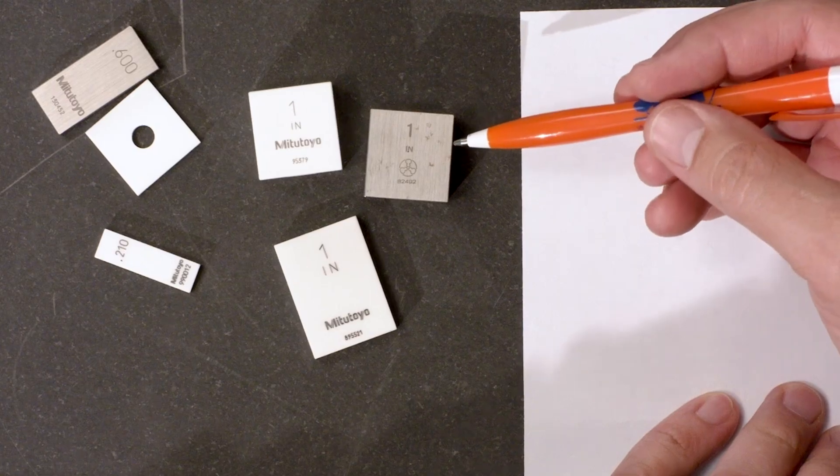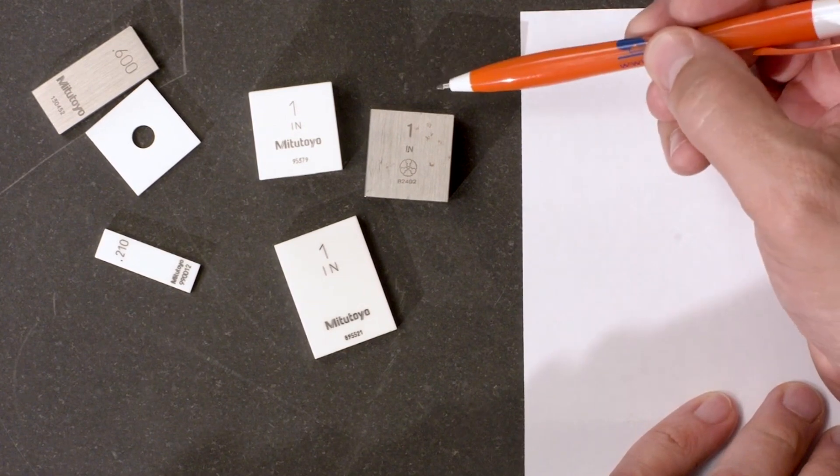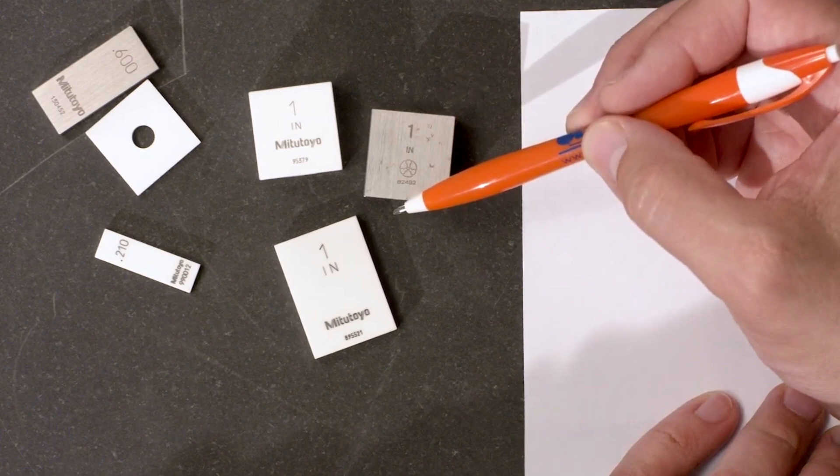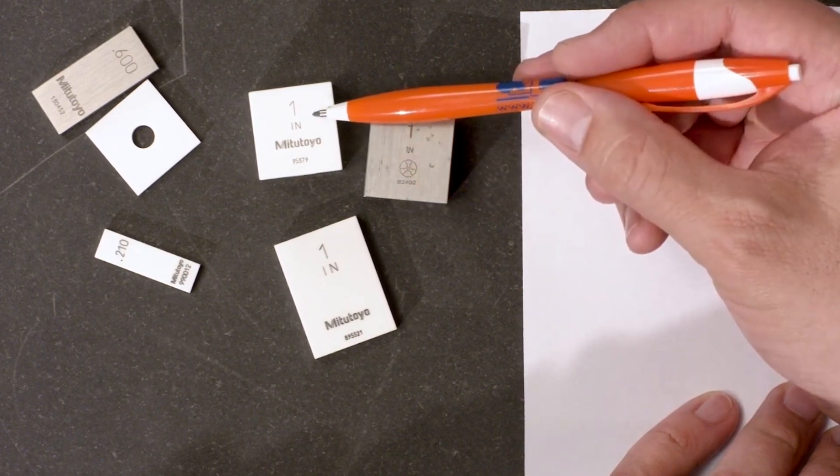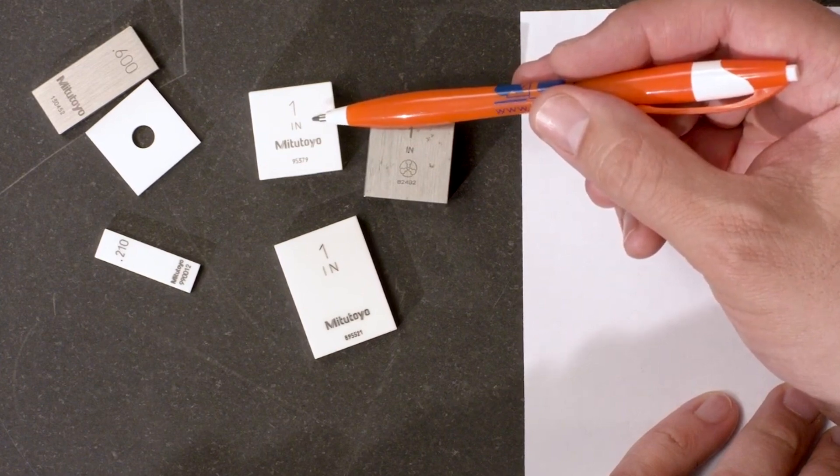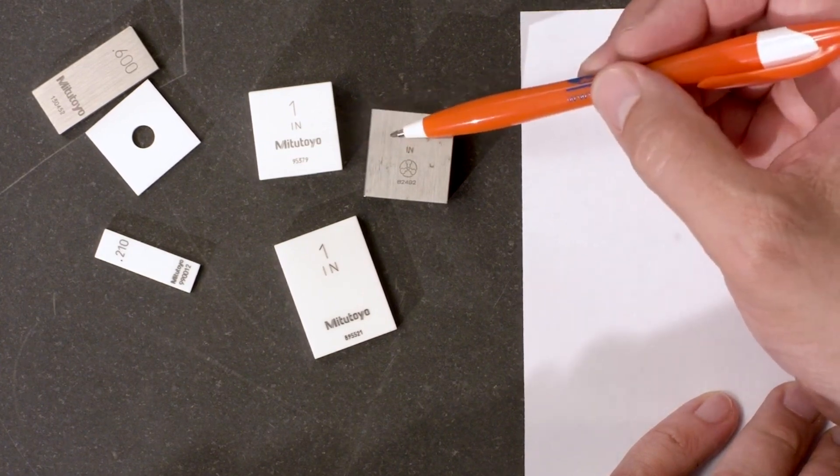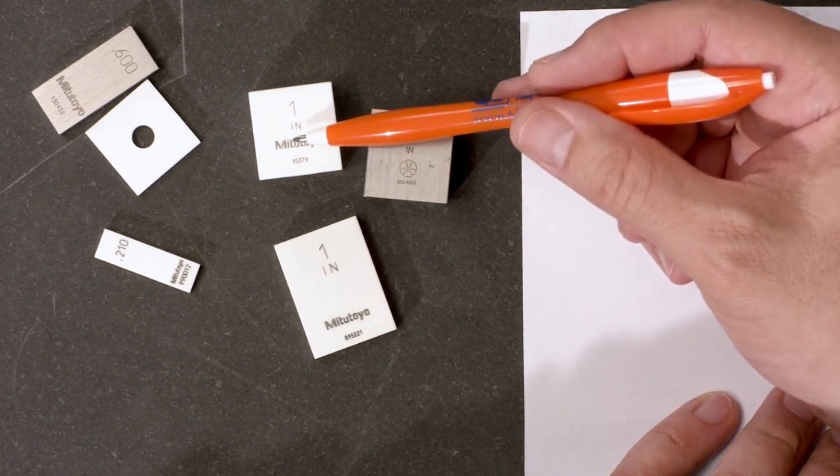Gauge Blocks are sold by grades. The grades define tolerances for the flatness and parallelism of the faces, as well as the tolerance for the size that's marked on the blocks. The grades apply whether the blocks are ceramic or steel, and whether they're rectangular or square.